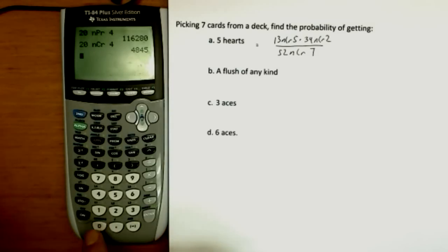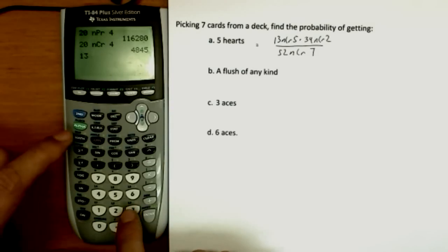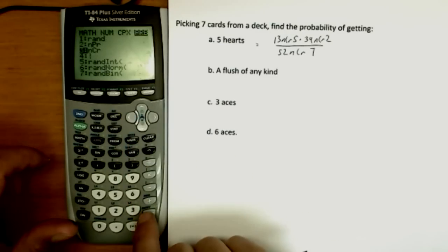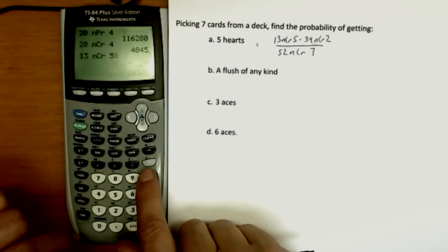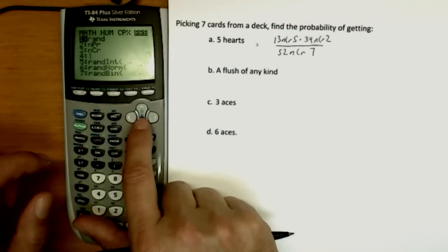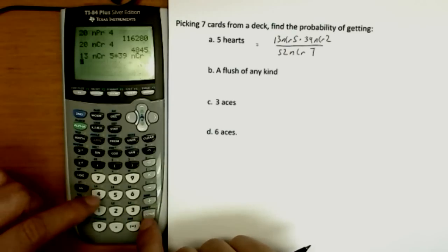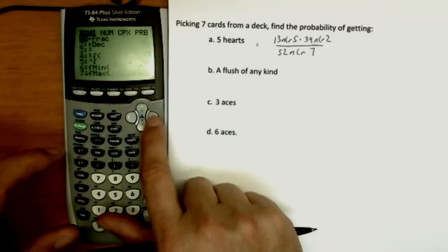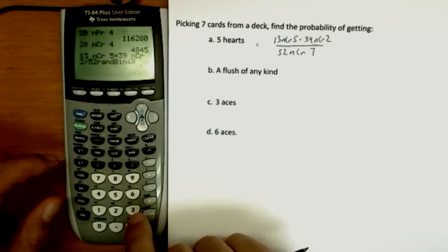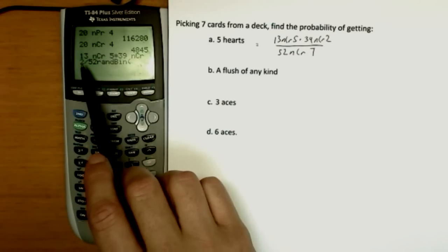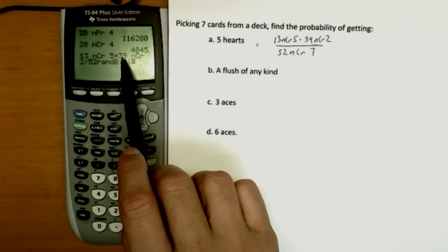Now, to do this on the calculator, we're going to get a little practice typing this. 13, I have to type the number first, math, probability, NCR, 5 times, it's always a multiply, 39, math, NCR, 2, divided by 52, math, NCR, 7. So, five chosen out of the 13 hearts, that's my five hearts. That implies, even though it wasn't said, we must have chosen the other two cards out of the rest of them, the 39.